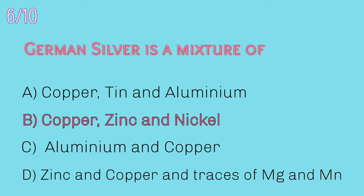Answer: Copper, zinc and nickel. German silver is an alloy of copper, zinc and nickel, sometimes also containing lead and tin. It was originally named for its silver-white colour, but the term silver is now prohibited for alloys not containing that metal.